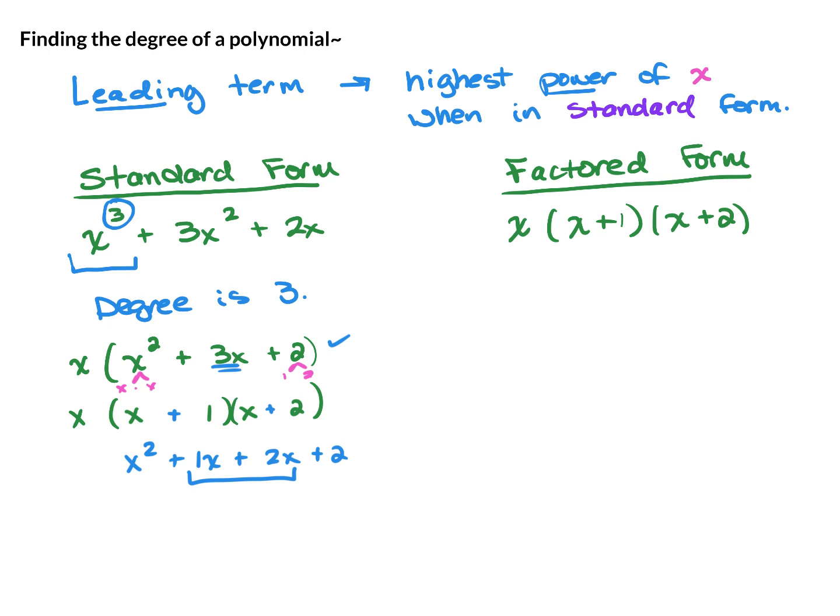So if you're in factored form and you need to find the degree, you could actually multiply everything back together. And you will notice you have x times x times x in the end, which will give you x cubed.